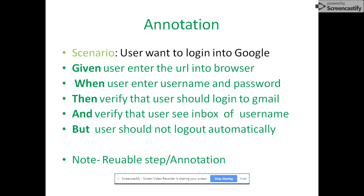The five annotations are: Given, When, Then, And, and But. Given is a precondition. When is an action. Then is a validation or verification. And can be a continuity of the previous step. But we write for a negative step validation.